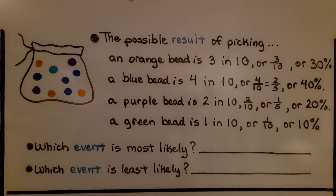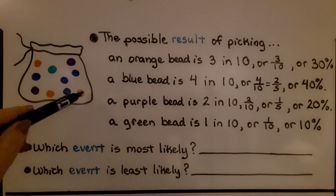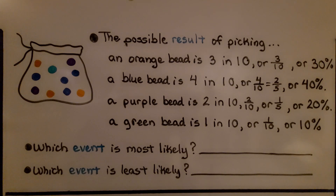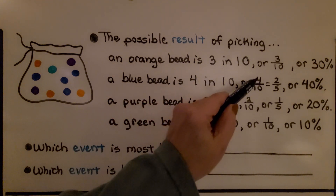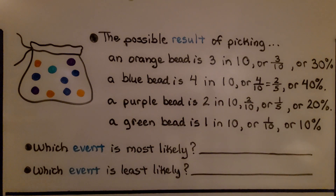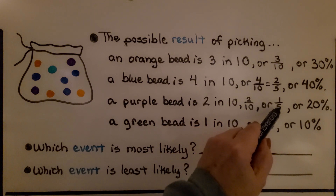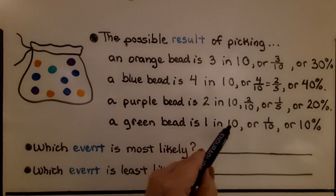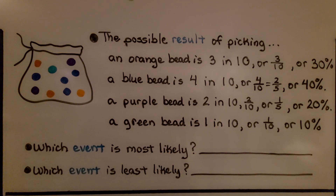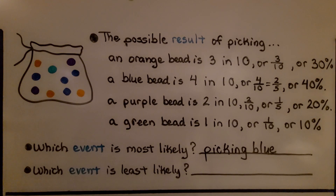The possible result of picking an orange bead is 3 in 10, or 3 tenths, which is also 30%. A blue bead — there are 4 of them — that would be 4 in 10 or 4 tenths, which simplifies to 2 fifths, and 4 tenths is also 40%. A purple bead — there are 2 — so that's 2 in 10 or 2 tenths, which simplifies to 1 fifth, and 2 tenths is 20%. There's only 1 green bead, so that's 1 in 10, or 1 tenth, or 10%. The most likely color to pick is blue, because there are 4 of them. The least likely is green, because there's only 1.